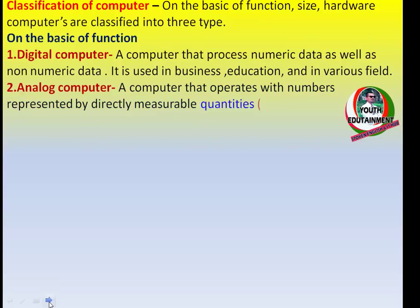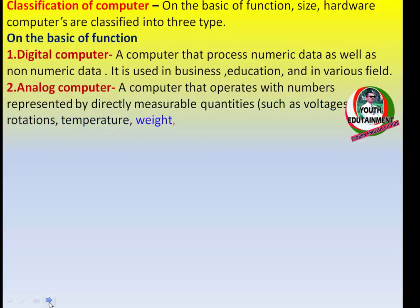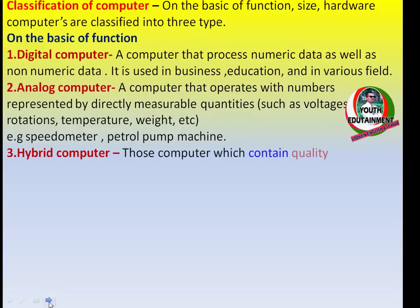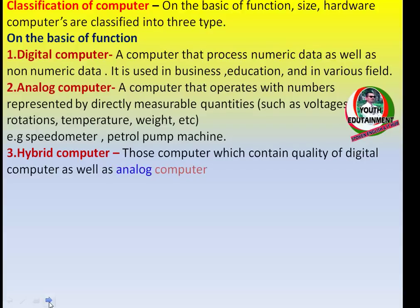An analog computer is a computer that processes numbers represented by directly measurable quantities such as voltage, rotation, temperature, weight, etc. The example of analog computer is speedometer, petrol pump machine, etc. Now we'll talk about hybrid computer.